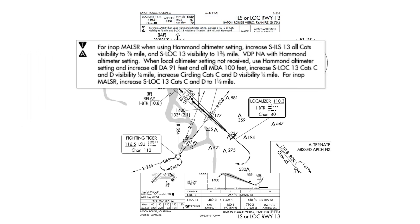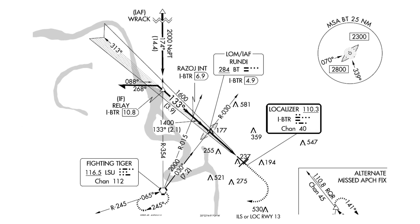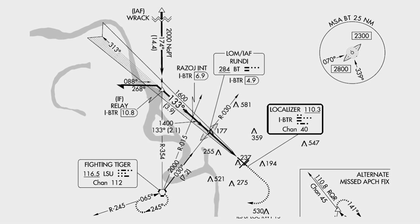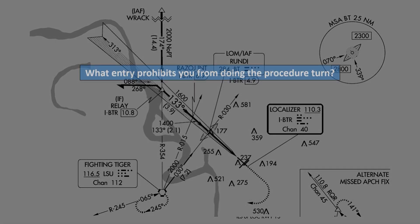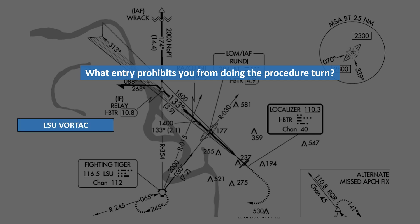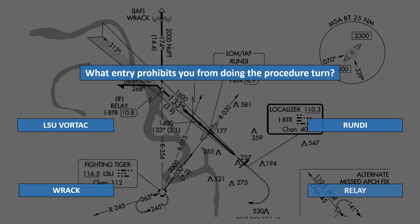Last question — let's look back at the approach plan view. What entry prohibits you from doing the procedure turn? The LSU VORTAC, Rundi, RAC, or Relay?